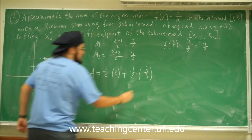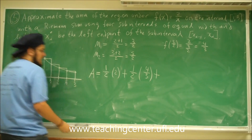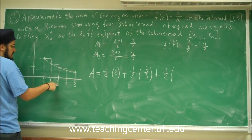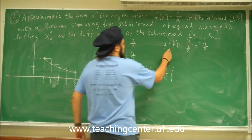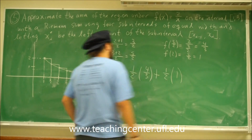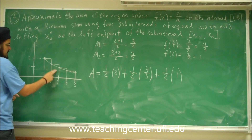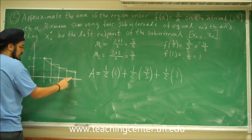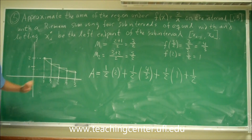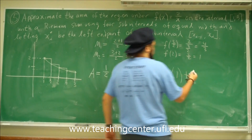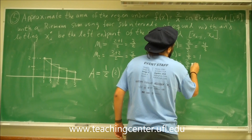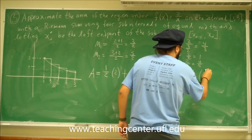Now add the area of the fourth rectangle. The width is again 1/2. Plug in 5/2 into the function: f(5/2) = 2 divided by 5/2 = 4/5. So that area is 1/2 times 4/5. So the total area is 1/2 times 2, plus 1/2 times 4/3, plus 1/2 times 1, plus 1/2 times 4/5.